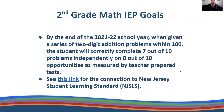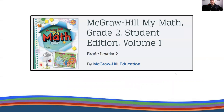Here is a second-grade math IEP goal example, which is something you'd be responsible for implementing. By the end of the 2021–2022 school year, when given a series of two-digit addition problems within 100, the student will correctly complete 7 out of 10 problems independently on 8 out of 10 opportunities, as measured by teacher-prepared tests. This connects to the New Jersey grade-level standard linked here. A very common math curriculum in this region is McGraw Hill My Math, and this is a second-grade example to connect with that IEP goal.